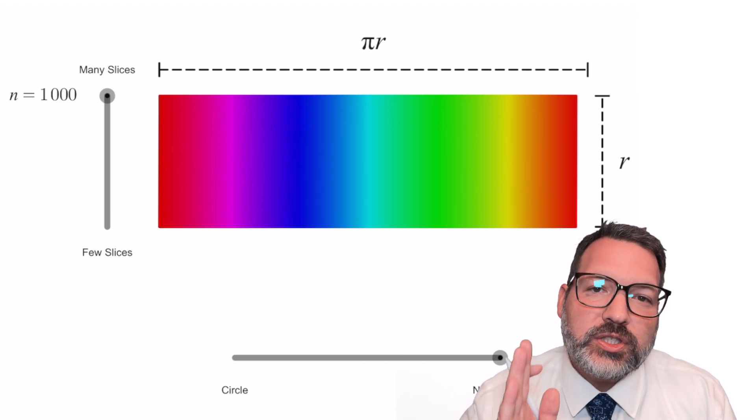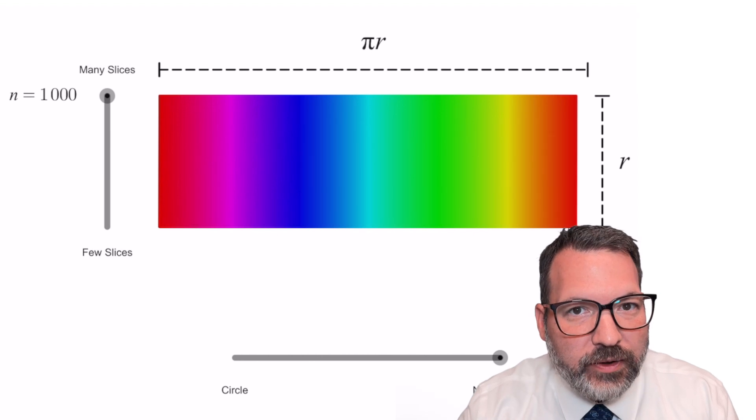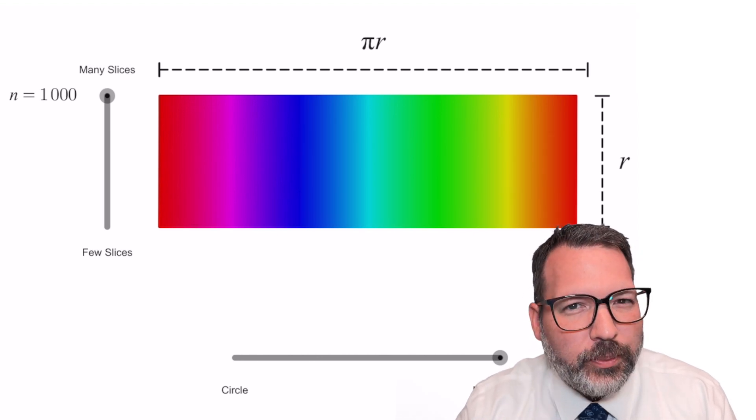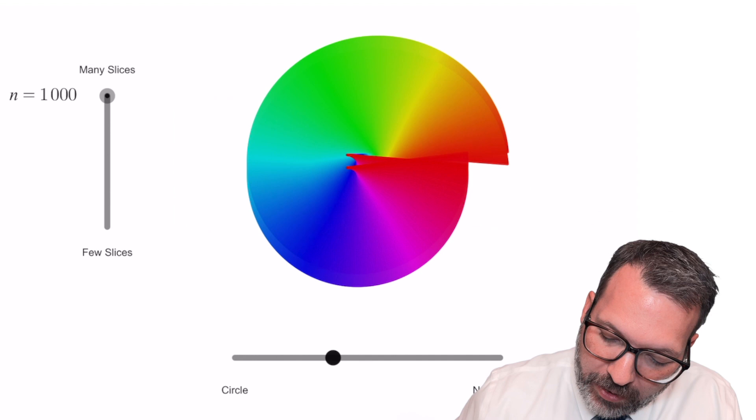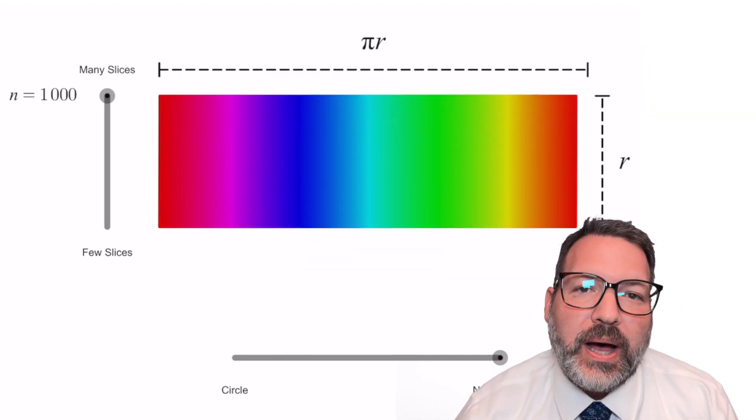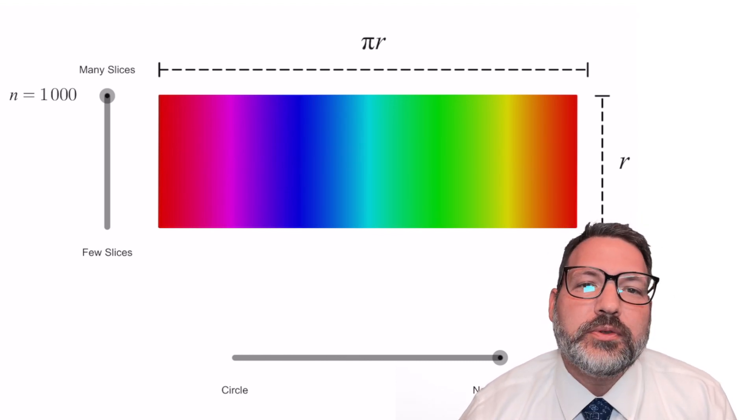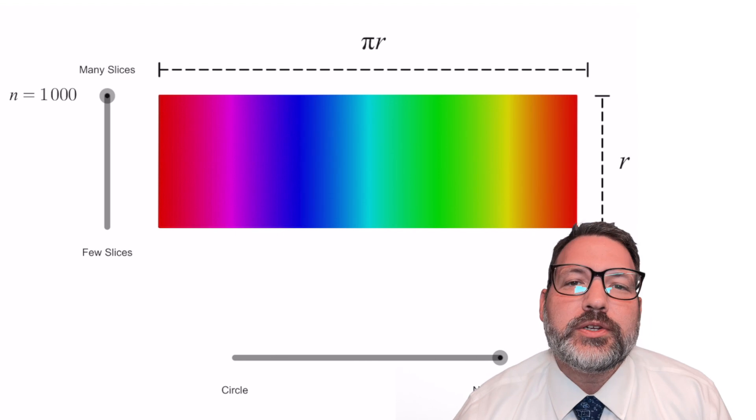And those infinitely many tiny triangular wedges genuinely have a straight up and down height of r and essentially a base by themselves of an infinitesimally small number as close to zero as you want, but that when you add them all back together, when you line them up, happen to add up to πr. The true innovation of calculus is giving us a way to do this that's rigorous enough that mathematicians can accept.